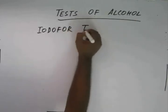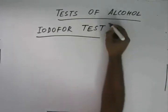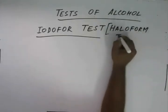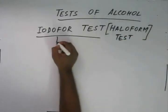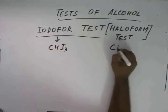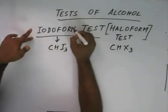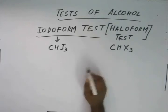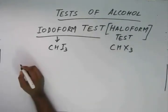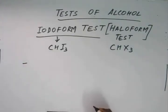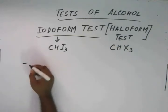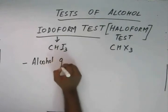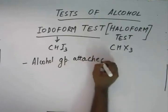The next test is the iodoform test — a very famous test. More generally, it can be written as the haloform test. Iodoform has the formula CHI₃, and haloforms have the general formula CHX₃. For example: CHF₃ is fluoroform, CHBr₃ is bromoform, CHCl₃ is chloroform. This is the general haloform test, and I'll discuss the iodoform test in detail.